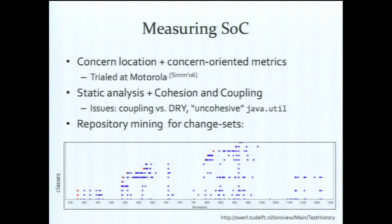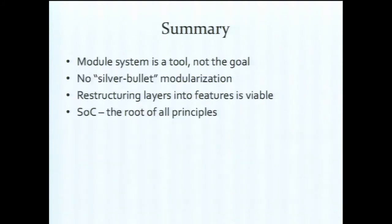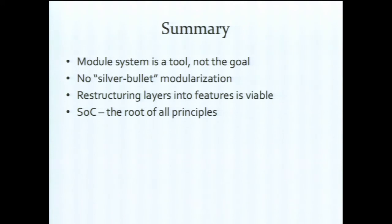The last way of measuring is repository mining — checking how classes change together in your program. If you plot a dot for each class on the axis of time, you will see if the classes you've put into modules actually evolve together. If they don't, then you have a problem. To sum up: a module system is a tool, not a goal in itself — it won't do the job for you, it's you that has to design the modules. There's no silver bullet modularization — it's very relative. It's possible to restructure from horizontal to vertical. Separation of concerns is the root of all principles, and that's the only one you really have to remember.